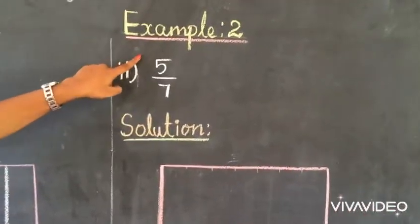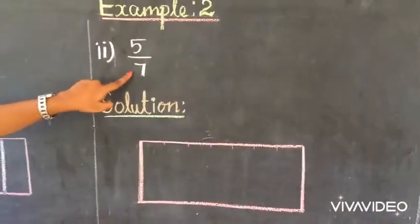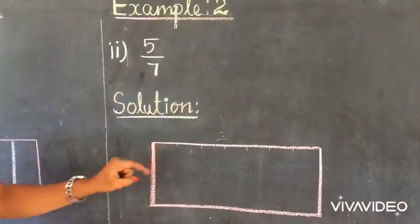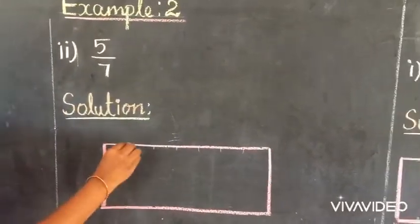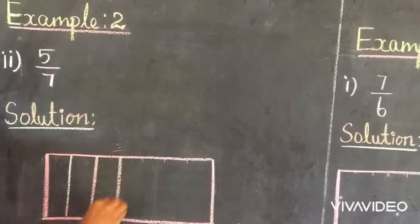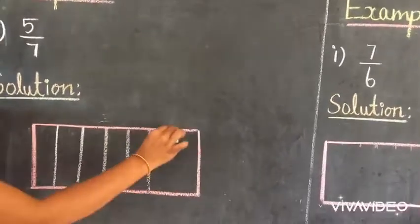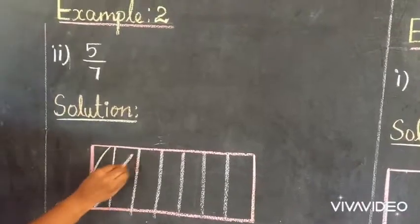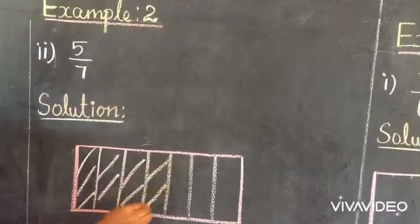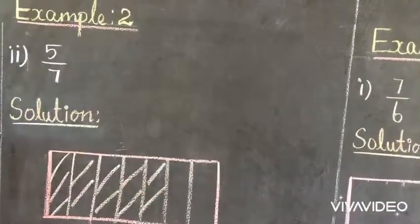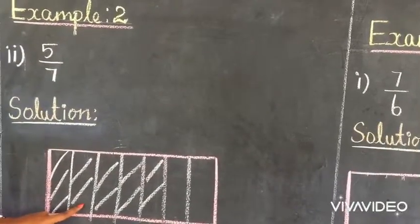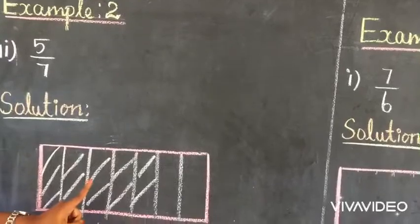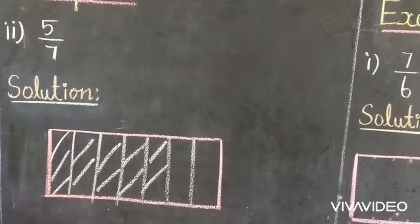Now let us see one more example: 5 by 7. In the same manner, one thing is divided into 7 equal parts and we share 5 parts. Here, we can share 5 out of 7 parts in one thing. So, it is a proper fraction.